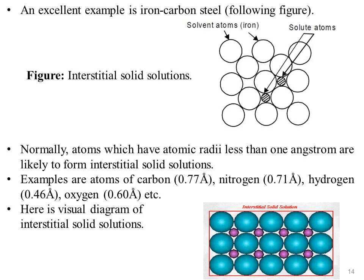An excellent example is iron-carbon steel, as shown in the following figure. In this system, the carbon (solute atom) occupies an interstitial position between iron atoms. Atoms which have atomic radii less than 1 angstrom are likely to form interstitial solid solutions. Examples are: carbon 0.77 Å, nitrogen 0.71 Å, hydrogen 0.46 Å, and oxygen 0.60 Å. Here is a visual diagram of interstitial solid solution.